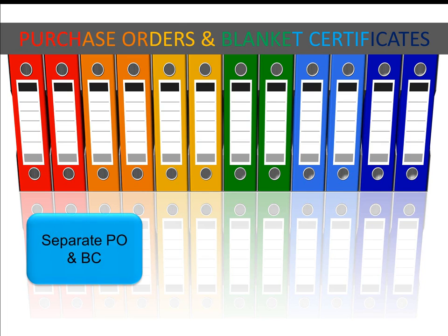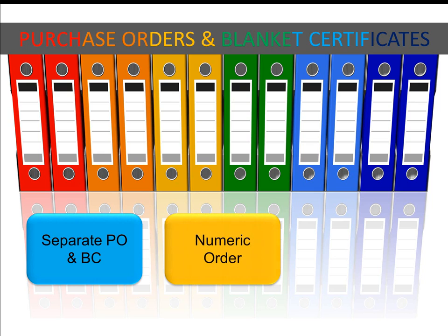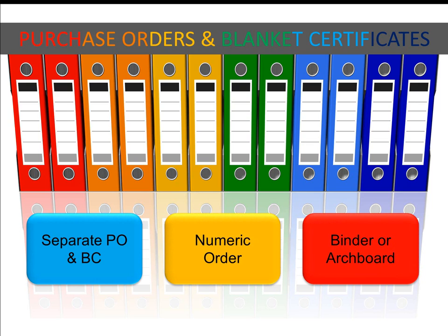Purchase orders and blanket certificates should be kept separate in numerical order in a binder or on an arch board. Requisition forms, quotes, and estimates can be filed with the PO. Don't put the PO or blanket certificate with the payment — the auditor has to verify the purchase orders and if they aren't in sequential order, it will make it more difficult and time-consuming to audit. The voucher stub or electronic payment voucher contains the POBC number and the appropriation account allocation, so it isn't necessary to file the original or a copy of the PO with the payment.